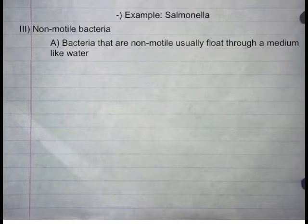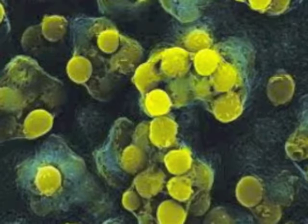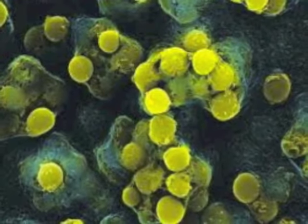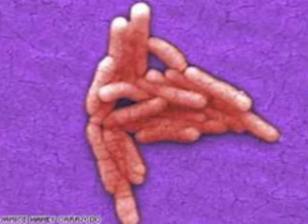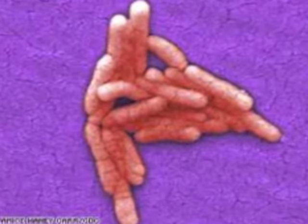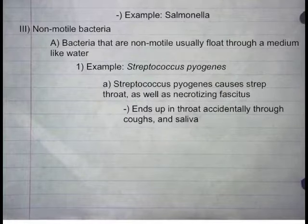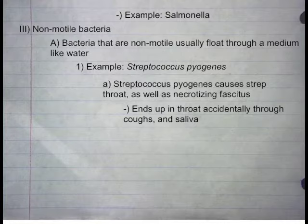Non-modal bacteria. Bacteria that are non-modal usually drift through a medium like water. Non-modal bacteria are ones that float through mediums and are unable to move on their own — they glide along and where they end up is pure luck. Example: Streptococcus pyogenes, which causes strep throat as well as necrotizing fasciitis, and ends up in the throat accidentally through coughs and saliva.